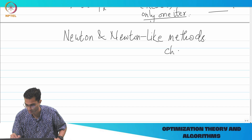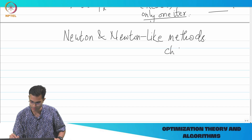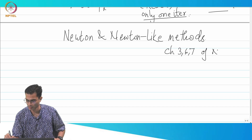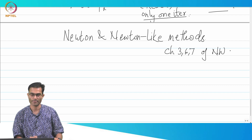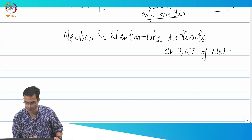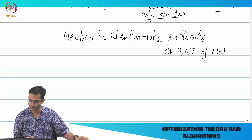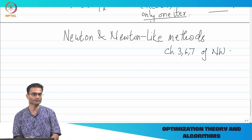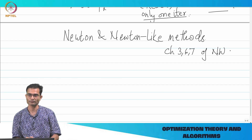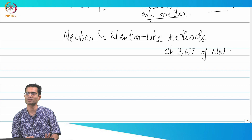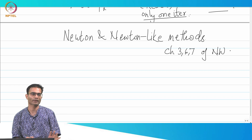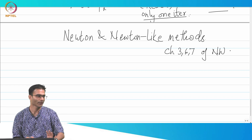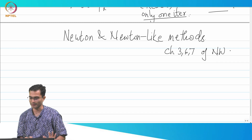For those of you reading the book, this is roughly chapters 3, 6, and 7 of Nocedal. We've already discussed the Newton direction when we started with line search methods, so everyone kind of knows the motivation.